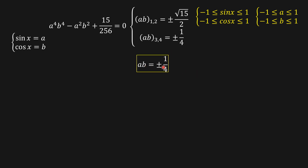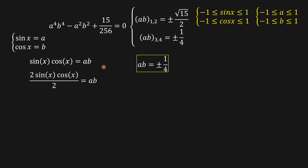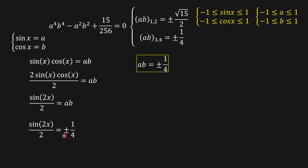From ab equals ±1/4, multiplying sine x and cosine x together and multiplying both sides by 2, we get 2 sin x cos x divided by 2, which equals sine of 2x over 2. Replacing ab with ±1/4, we have sine(2x)/2 = ±1/4.